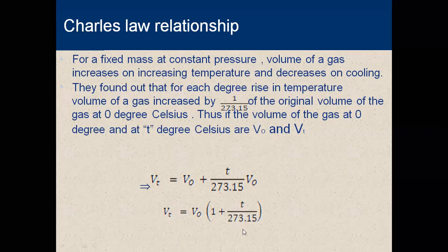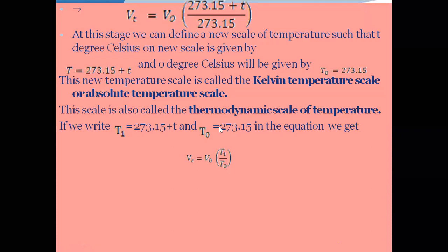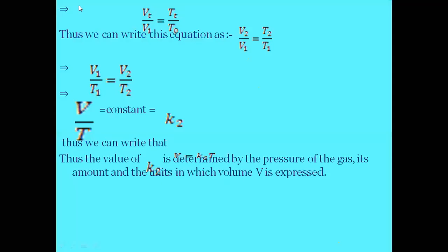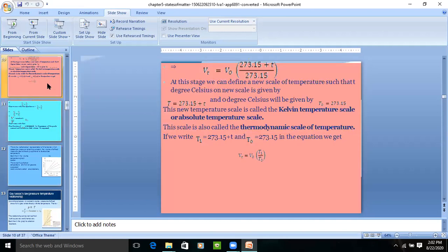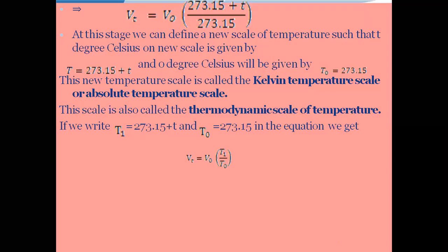They observed that increasing one degree of temperature produces a change in volume of 1/273.15 degrees Celsius. This can be expressed mathematically as Vt equals V₀ times (1 + t/273.15). If we define T as 273.15 plus t, then Vt equals V₀ times (T1/T0). At this stage, we can define a new scale of temperature based on this relationship.